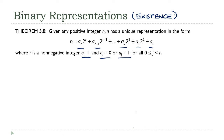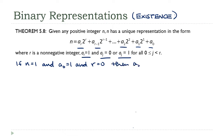To show existence, we're going to use strong induction. Our basis step is to look at the smallest positive integer. Let's look at n equals 1. If n equals 1, and a sub 0 equals 1, and r equals 0, then a sub 0 times 2 to the 0 equals 1. We've come up with the binary representation of 1.